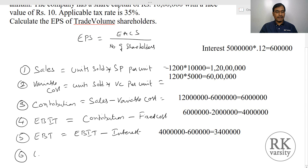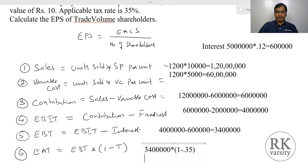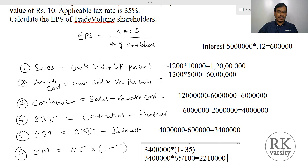Then calculate Earnings After Tax. Earnings After Tax equals Earnings Before Tax times (1 minus tax rate). The tax rate is 35%, so Earnings After Tax is 34 lakhs times (1 minus 0.35), which is 34 lakhs times 65%, giving Earnings After Tax of 22 lakhs 10,000.